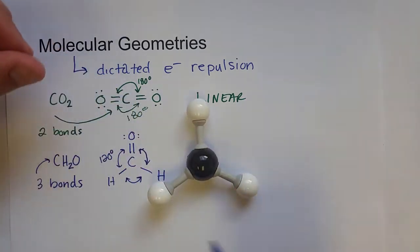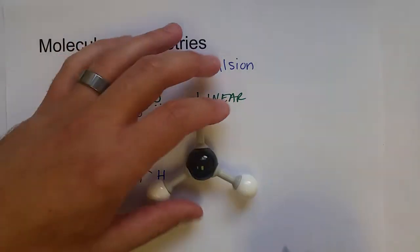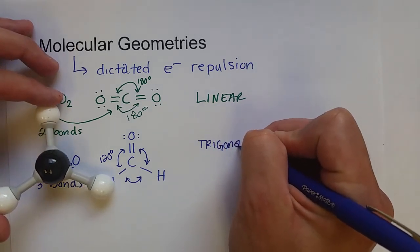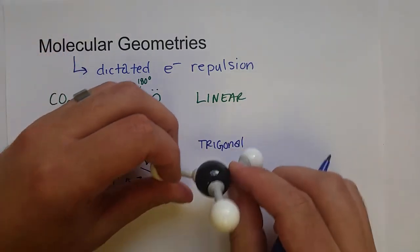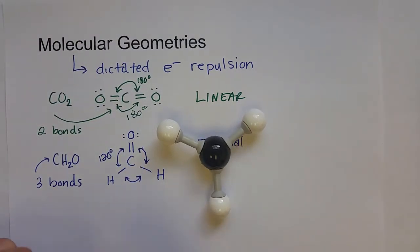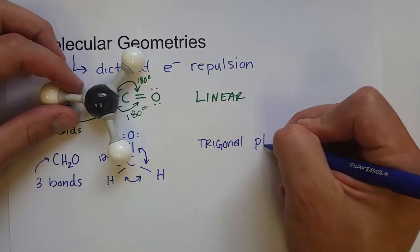So this kind of looks like a triangle to me, and so we actually call this trigonal. And since all of these molecules are in the same plane, all of them are sort of flat on this piece of paper, we call this trigonal planar.